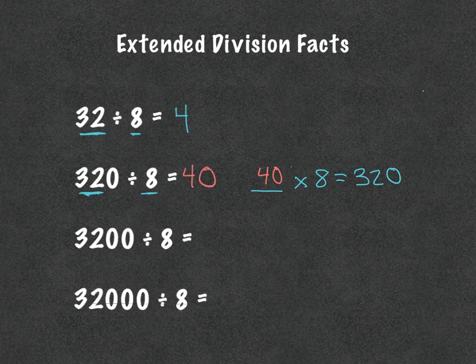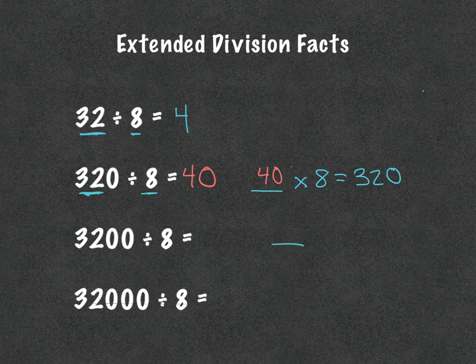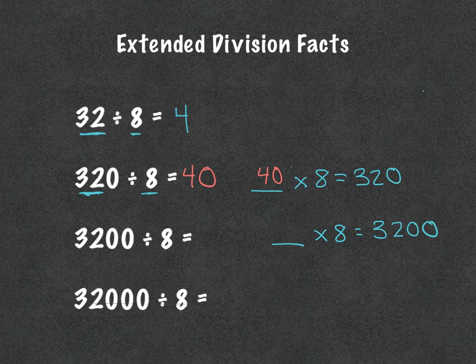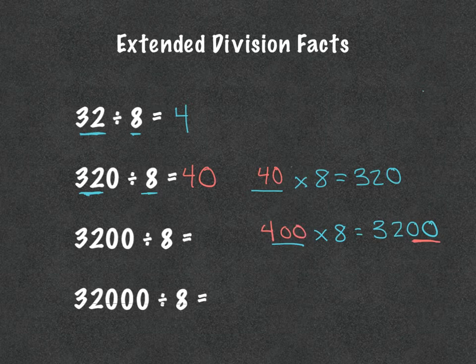So then the next one: what times 8 would equal 3,200? We have 4 times 8 would equal 32, and it's 100 times bigger, so the answer is 400.